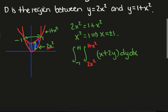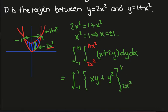So now we just evaluate this in the usual way. So we have the outside integral is left alone and we integrate with respect to y, so we'll end up with xy plus y squared, and this is bounded between 2x squared and 1 plus x squared.